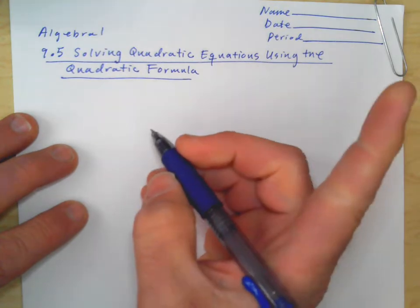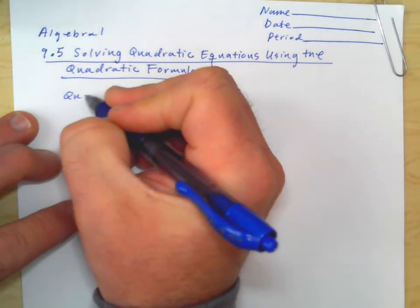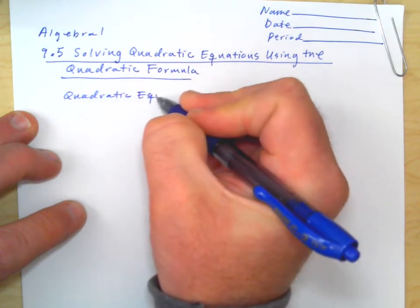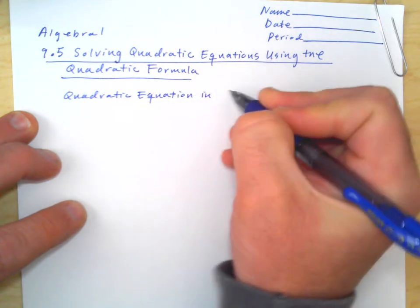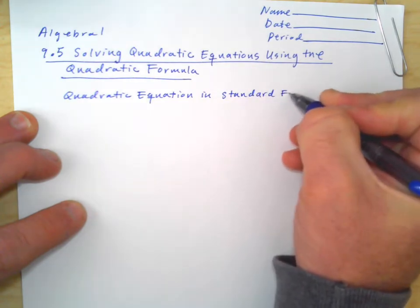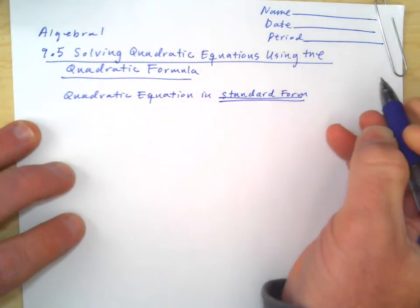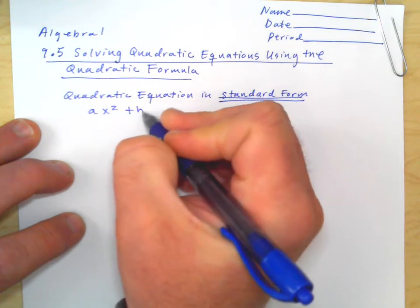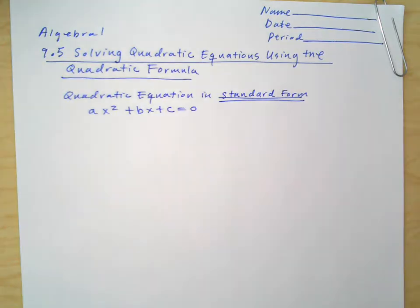What is the quadratic formula? To use the quadratic formula, we're going to use it on quadratic equations. But the quadratic equation needs to be in standard form. This is something we've been dealing with before. Standard form would be ax squared plus bx plus c equals 0. So that's standard form.